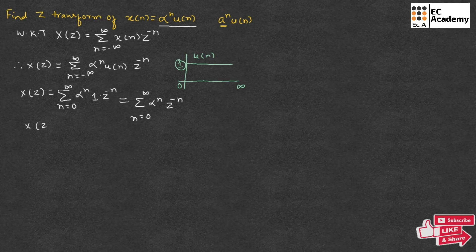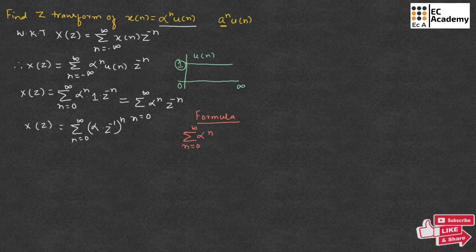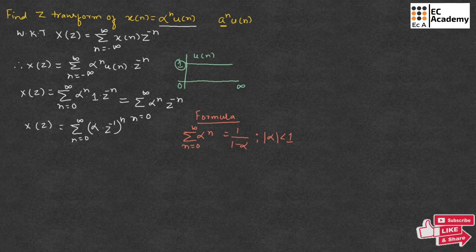We can rewrite X(z) as the summation from n equals 0 to infinity of (alpha times z to the power of minus 1) to the power of n. Using the infinite sum formula — which states that the summation from n equals 0 to infinity of alpha to the power of n equals 1 divided by (1 minus alpha), where the magnitude of alpha must be less than 1 — we can write X(z) equals 1 divided by (1 minus alpha z inverse).